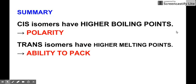Cis isomers will have higher boiling point because of their polarity, because they're polar, because of high or stronger IMF, while trans isomers have higher melting points because they can easily pack themselves when they freeze. So that's it. That's a brief explanation of the effect of cis and trans isomers to their boiling and melting points.